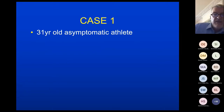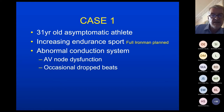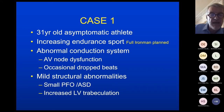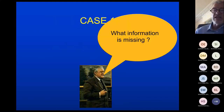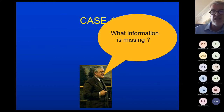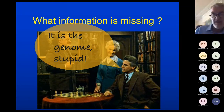I'm not going to give you an answer, but a couple of questions: he's a 31-year-old asymptomatic athlete doing a lot of exercise, increasing his endurance sport, planning a full Ironman. He's never had a symptom, but clearly has an abnormal conduction system — AV node dysfunction, occasional drop beats, mild structural abnormalities including a small PFO/ASD, and a little bit of increased LV trabeculation. Is this safe? And what information is missing? The key is in the title of this talk — we have no idea what his genetic background is, and that's critically important, because it's the genome that often moderates the outcome in this condition.